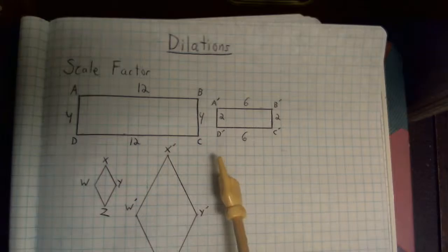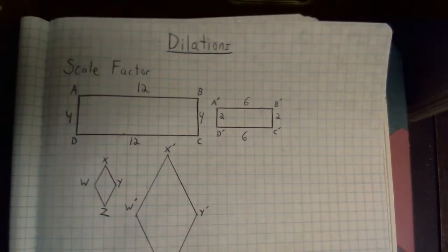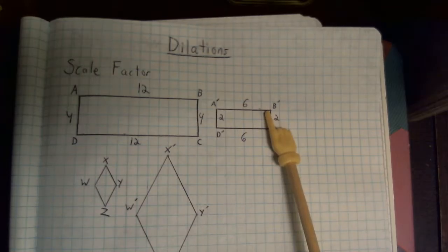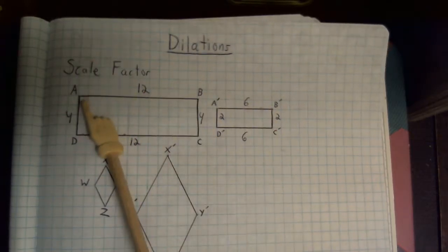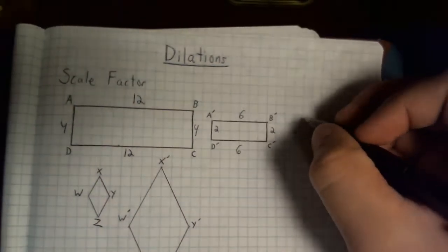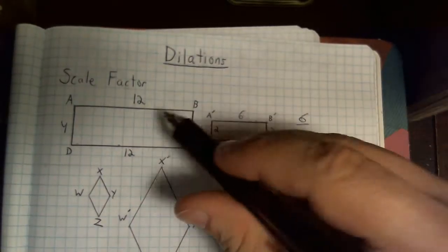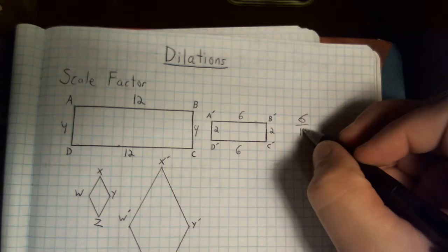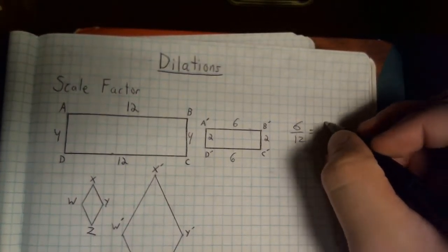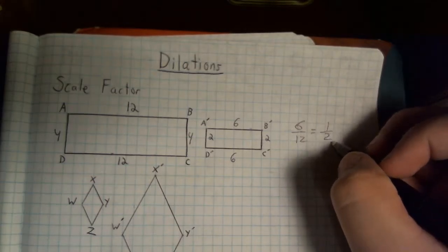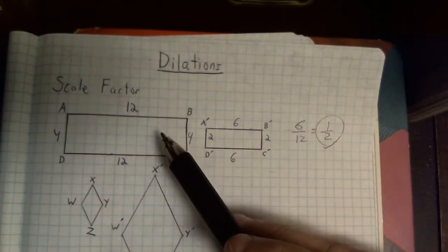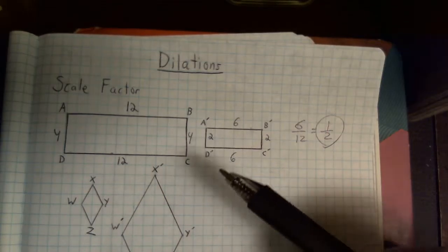The easiest way to find scale factor is we're going to take our image side and we're going to divide it by a corresponding pre-image side. So if I take 6 and I divide it by the corresponding side, 12, using these two sides, and I reduce, I will notice that my answer is 1 half. That means the scale factor from this rectangle to here is 1 half.